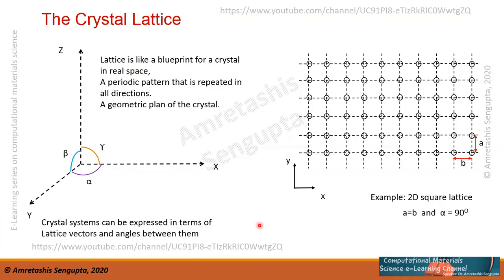Talking about crystallography and crystals — we live in the real world and in three-dimensional space we have our coordinate system x, y, and z, and the associated angles alpha, beta, and gamma. A very important point in studying any crystalline material is the lattice. What is a lattice? It is like a blueprint for a crystal in real space. It is a periodic pattern that is repeated in all directions in space.